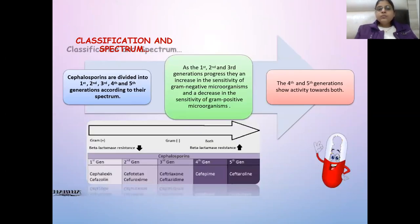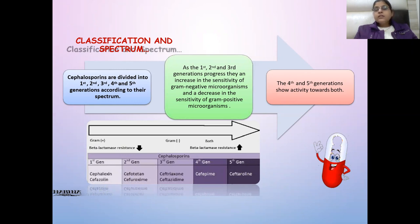The cephalosporins are divided into first, second, third, fourth, and fifth generations. First generation are effective against gram-positive bacteria. Second and third are effective against both gram-positive and gram-negative. Second generation is also effective against anaerobes. Third generation has the widest spectrum, effective against both gram-positive and gram-negative. Fourth generation are effective against gram-negative bacteria. Fifth generation are effective against MRSA — methicillin-resistant Staphylococcus aureus.